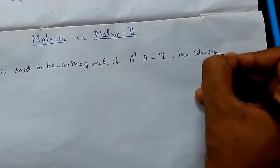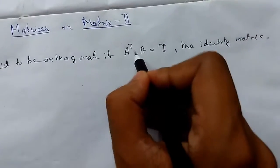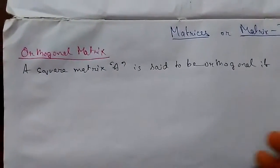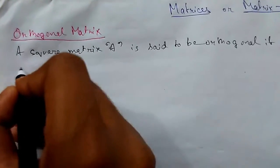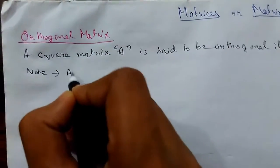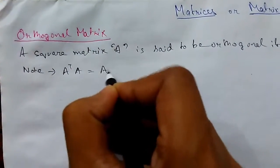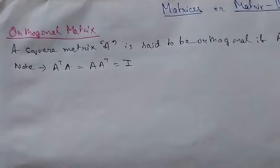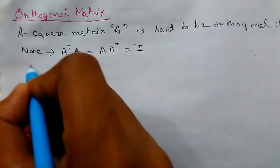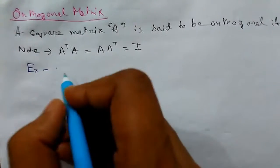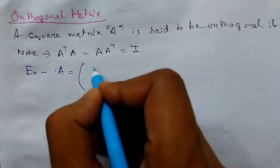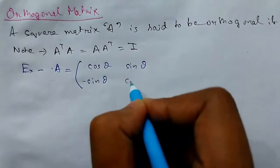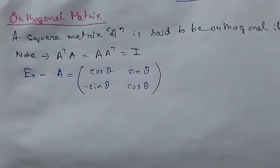So A transpose times A will give I, then it will be called an orthogonal matrix. Note that A transpose times A is also equal to A times A transpose, which equals I. Now let me show you an example. Suppose you have the matrix with entries cos theta, sine theta, minus sine theta, and cos theta. We need to verify whether it is an orthogonal matrix or not.